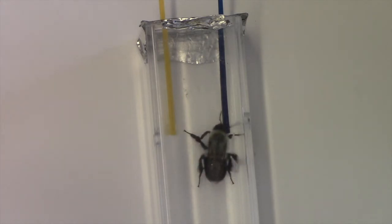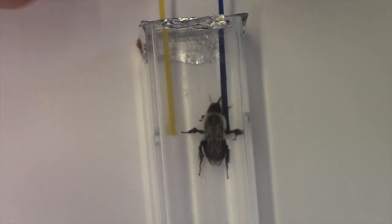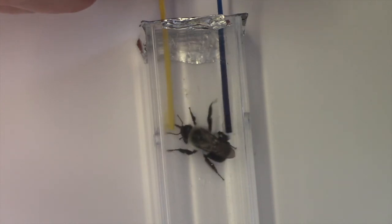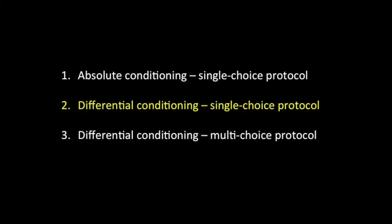Although you do see that when she finds there's only water in the blue strip, she does pretty rapidly move over and sample the yellow strip as well. In contrast to absolute conditioning, where an animal is given a stimulus and reward, animals can also be trained via differential conditioning, where they're given both a stimulus and a reward, but also a different stimulus paired with either a punishment or lack of reward.